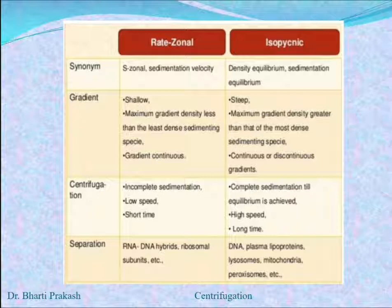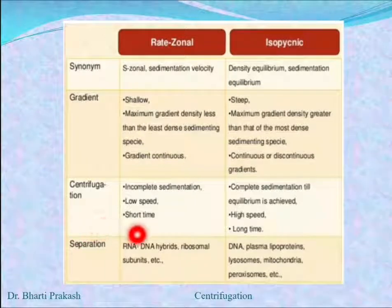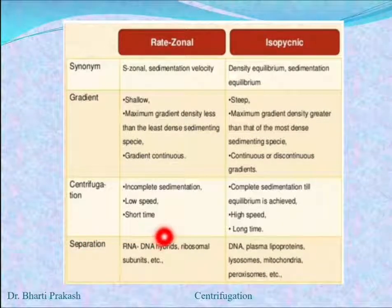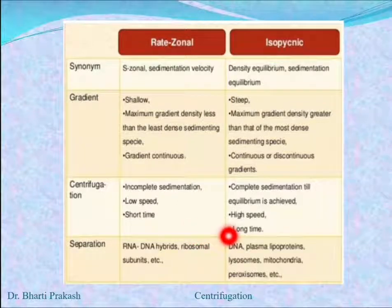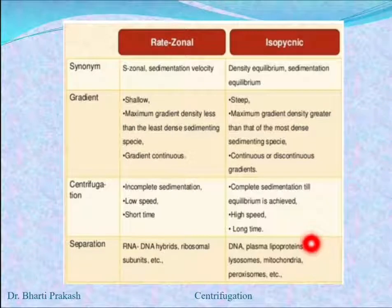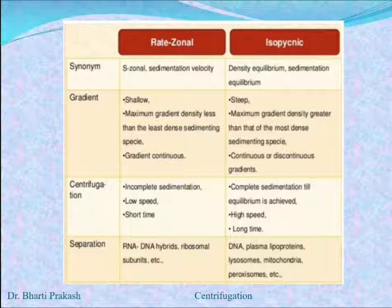Regarding separation: in rate zonal sedimentation, RNA, DNA hybrids, ribosomal subunits, etc. are separated. Whereas in isopicnic separation, DNA, plasma lipoproteins, lysosomes, mitochondria, peroxisomes, etc. are separated.